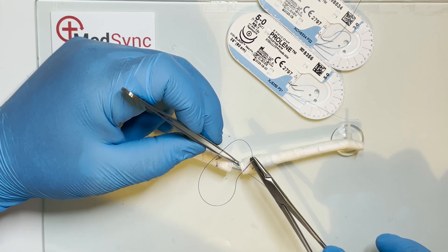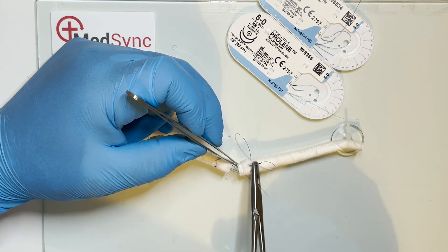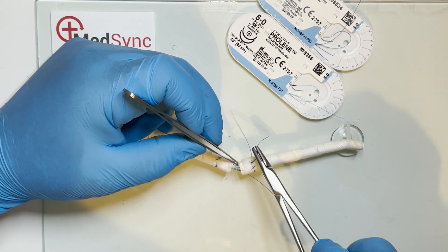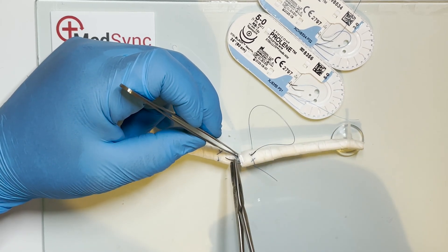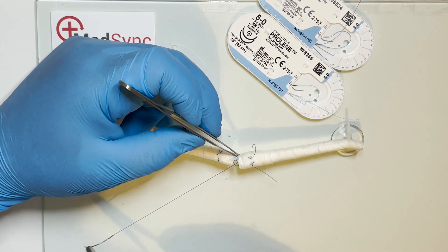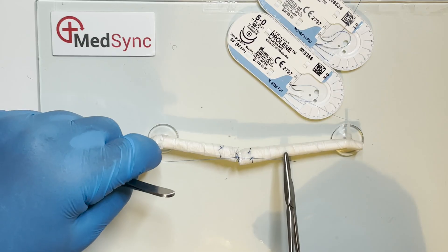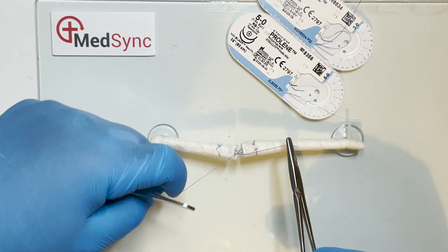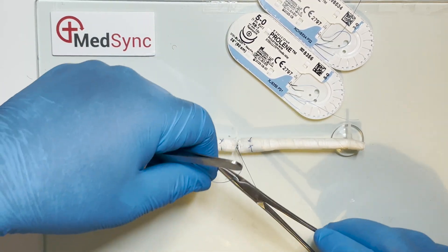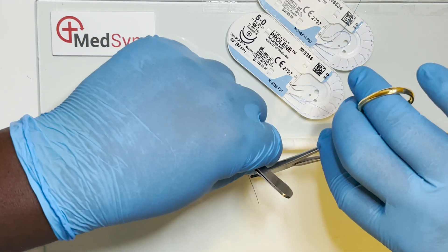The cross is completed with an oblique bite across the visible suture, exiting centrally within the divided tendon. The monofilament is tied with four to six knots.